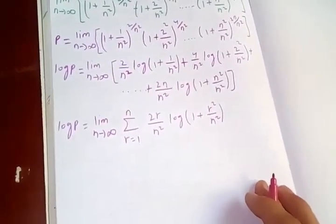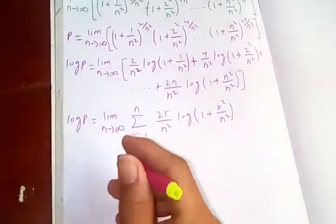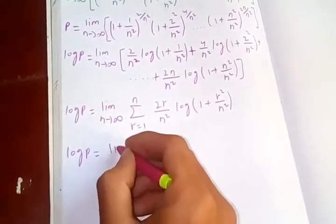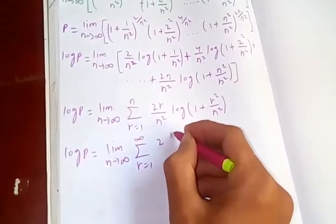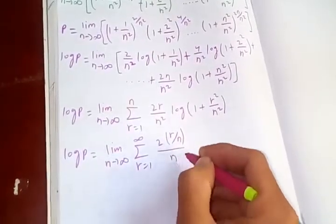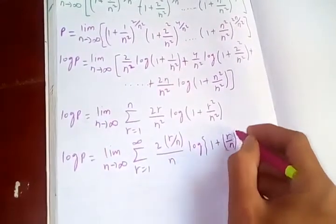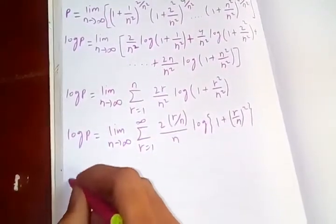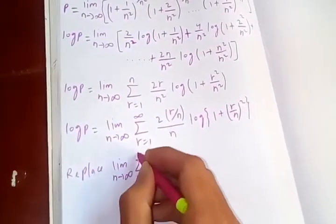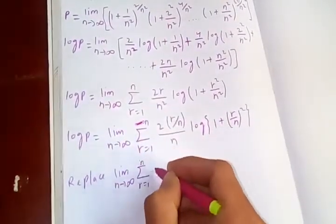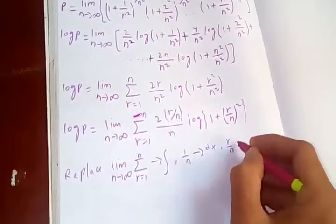Now we are going to convert this using the limit of a Riemann sum as a definite integral. So log p equals the limit as n tends to infinity of the sum from r = 1 to n of (2r/n²)·log(1 + r²/n²). We can rewrite 2r/n² as 2·(r/n)·(1/n), where 1/n becomes dx and r/n becomes x.